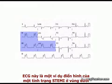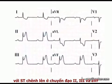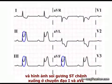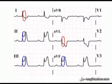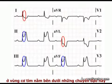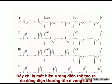This ECG demonstrates the classical pattern of inferior ST elevation MI with ST elevation in leads 2, 3 and AVF and reciprocal ST depression in leads 1 and AVL. In this example, reciprocal change in leads 1 and AVL does not indicate disease in the region under these leads — it is purely an electrical phenomenon produced by injury current in the inferior region.